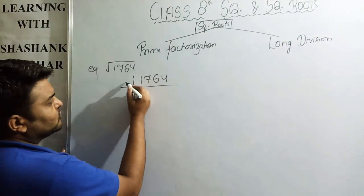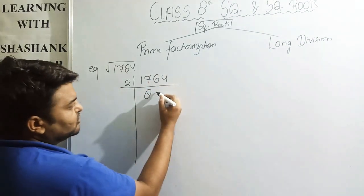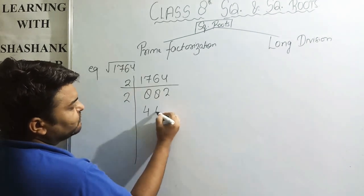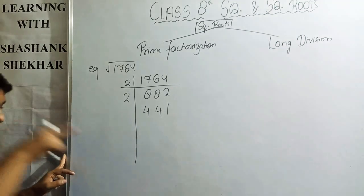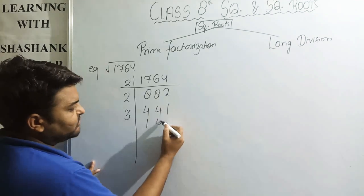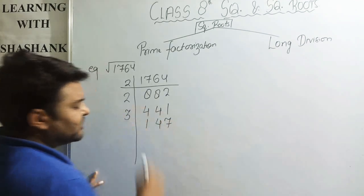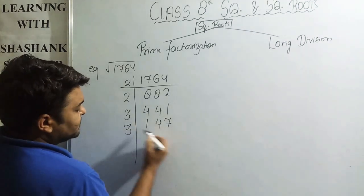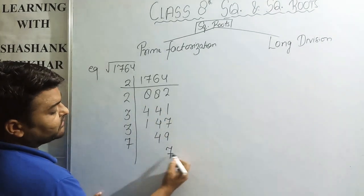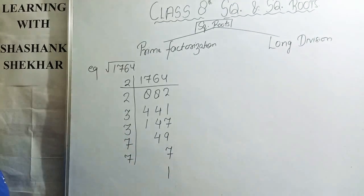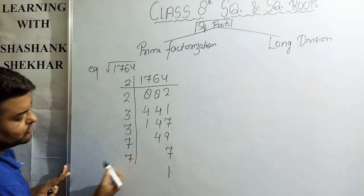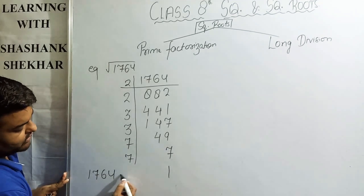Dividing 1764 by 2 gives 882. Next, dividing 882 by 2 gives 441. Then dividing by 3: 441 divided by 3 gives 147, then 147 divided by 3 gives 49, and 49 divided by 7 gives 7, and 7 divided by 7 gives 1. So the remainder is 1 and the division is finished.